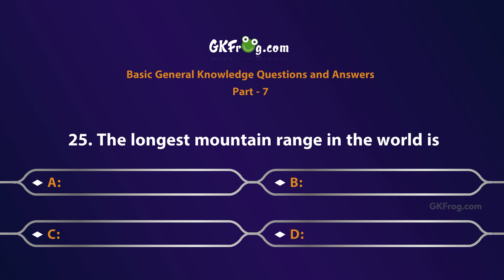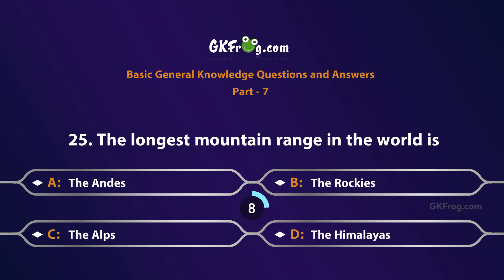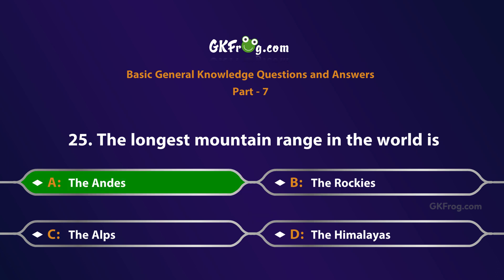The longest mountain range in the world is: A. The Andes, B. The Rockies, C. The Alps, D. The Himalayas. Correct answer is A. The Andes.